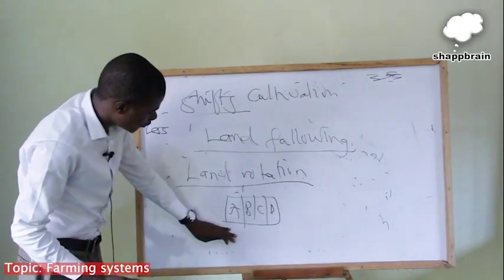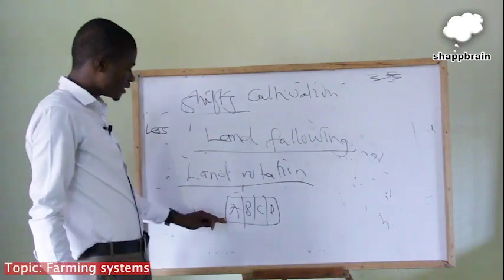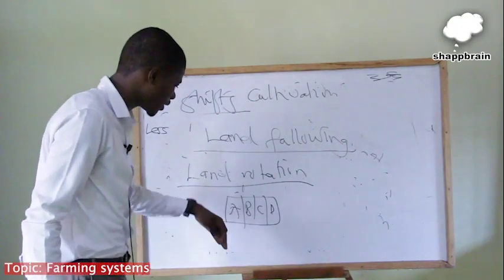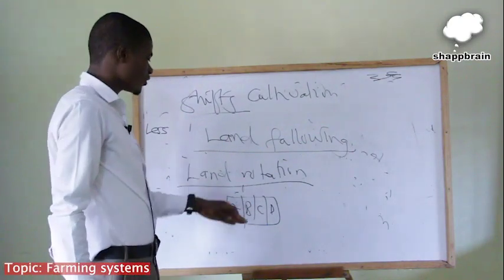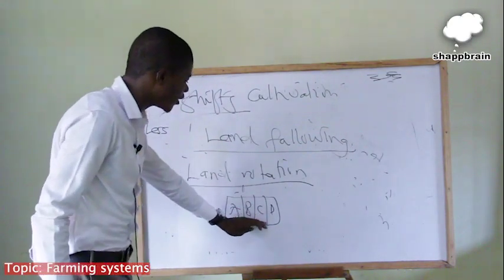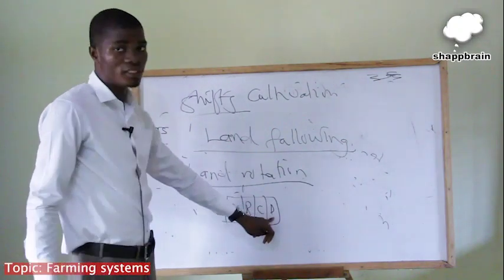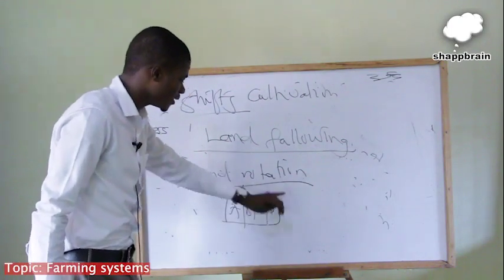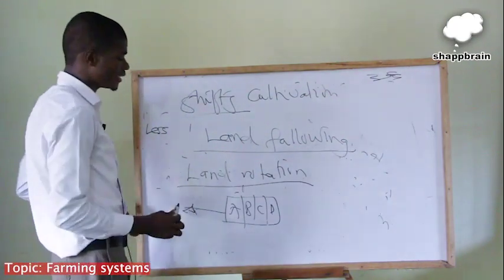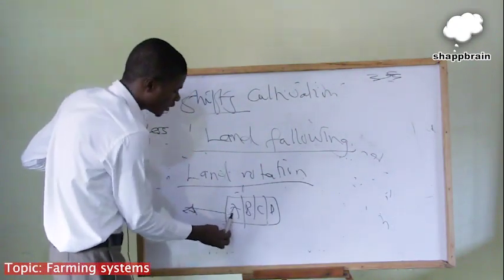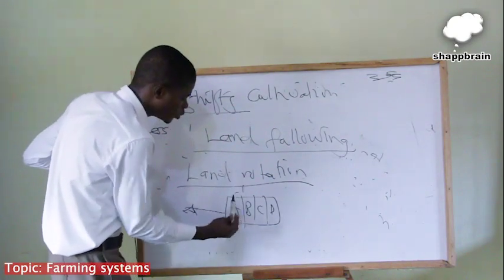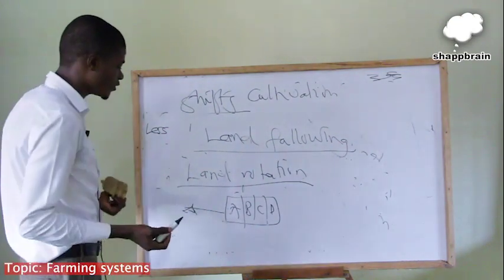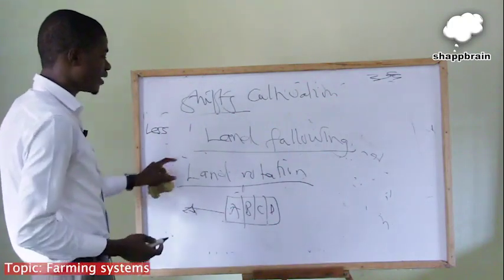The farmer farms on plot A for some period of time. When the nutrients are depleted in plot A, the farmer moves to plot B. When the nutrients also deplete there, he moves to plot C, then to plot D. When the nutrients in plot D cannot sustain the growth of plants, he comes back to plot A. By that time, plot A would have regained its nutrients because it has been left to fallow for some number of years — like three or four years or a longer period.